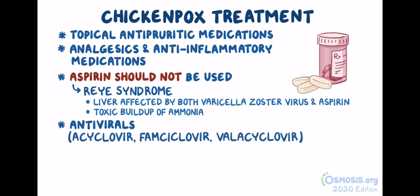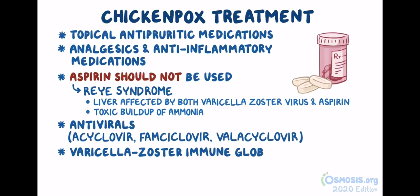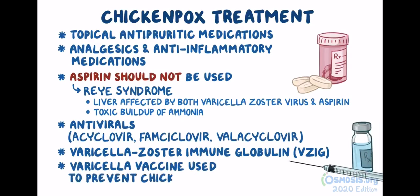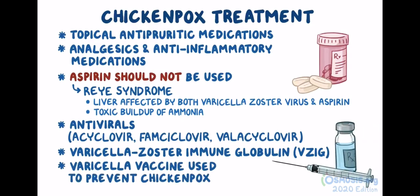In some situations, varicella zoster immunoglobulin, or VZIG, which are antivaricella antibodies, can be given to treat immunocompromised or pregnant individuals. Finally, the varicella vaccine can be used to prevent chickenpox by helping the body mount protective immunity against a weakened form of the virus.